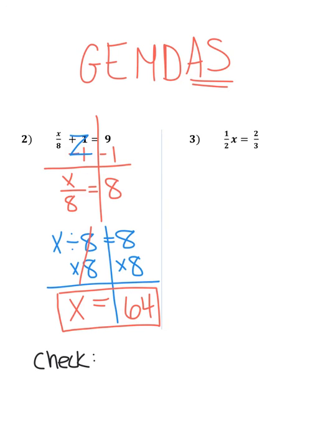Now, remember, checking equations will always tell you if your answer is right or not. So let's take X equals 64 and rewrite it in our original problem. We're going to prove that this is actually true. So 64 divided by eight is eight. And if we add one to that, then in fact, we show that nine equals nine. So that checks out.